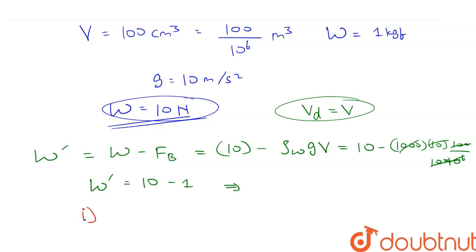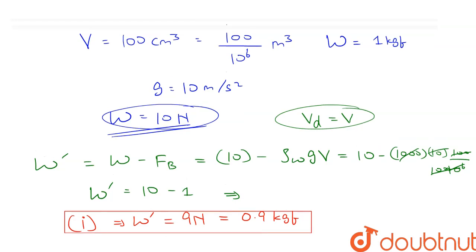This becomes 1000, 1000, and 1000 are cancelled, so we have 10 minus 1. Therefore the weight in water is equal to 9 newtons, or in terms of kg force, this will be equal to 9 upon 10, which is equal to 0.9 kgf. This is the answer to the first part.